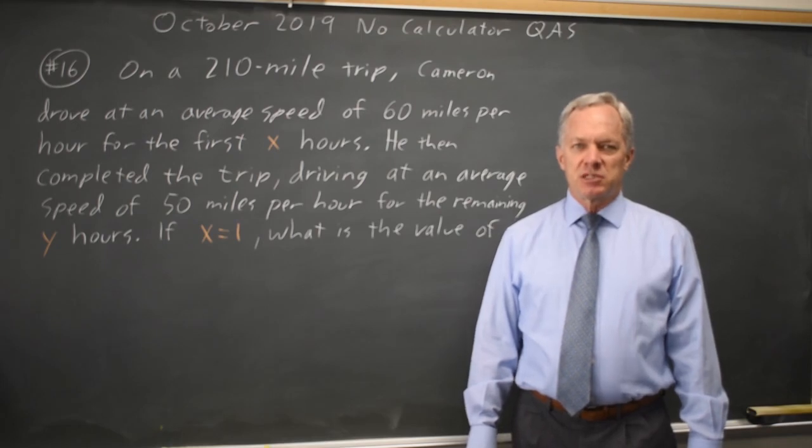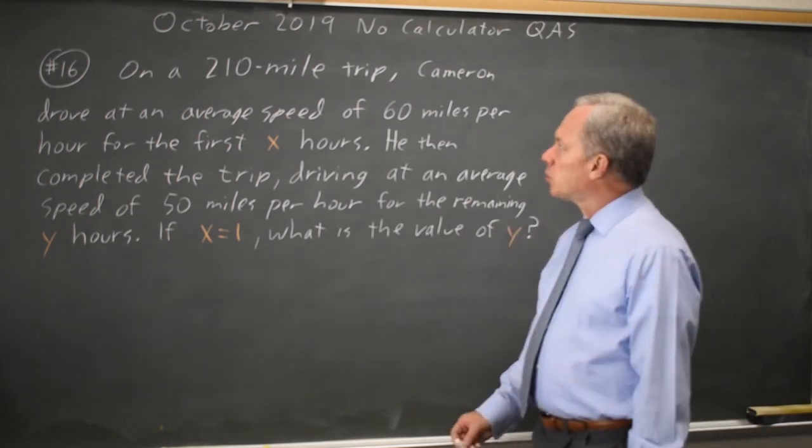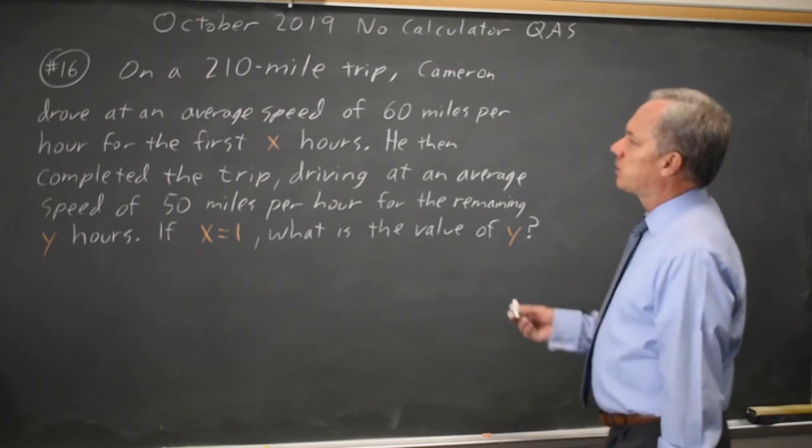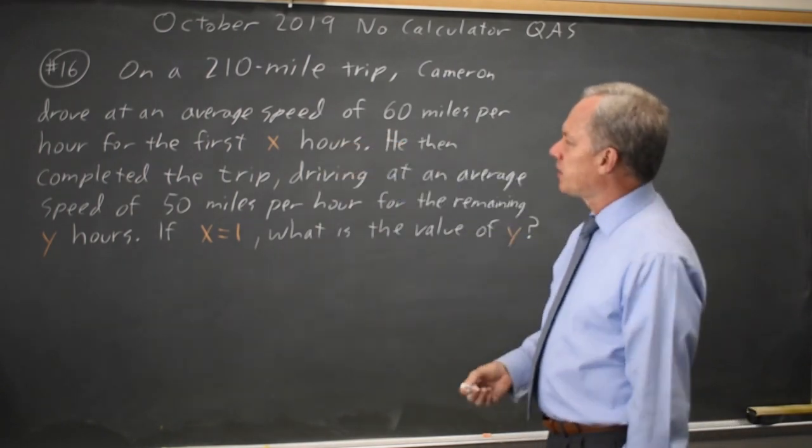This is question 16. College Board is giving us a rate question. We're told that on a 210-mile trip, Cameron averaged 60 miles per hour for X hours.